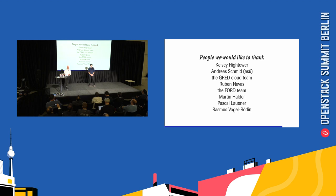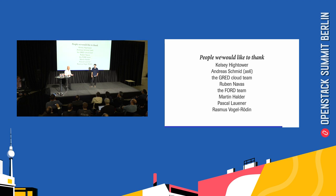Some special thanks — without these people this presentation wouldn't have been possible. The first is someone who did a similar presentation staging up a Kubernetes cluster on Google, stating: it's so easy that you can ask for it. That was exactly our message — it's so easy to create a VM that you can ask for it. Also Martin, who provided the DigitalOcean Droplets so we could set it up, and Rasmus, who did a nice picture.